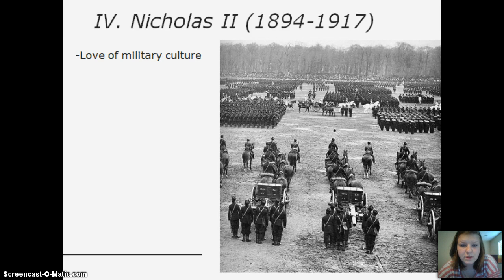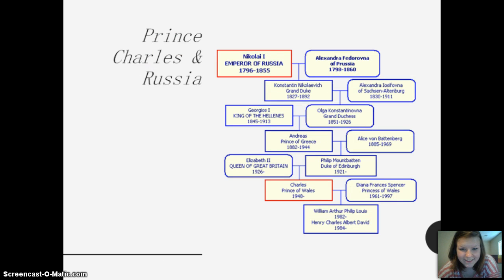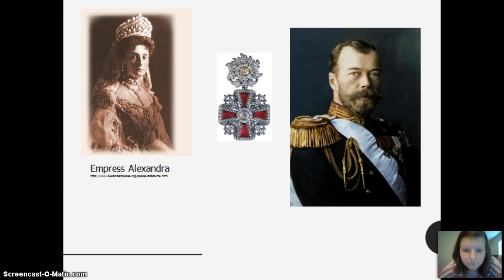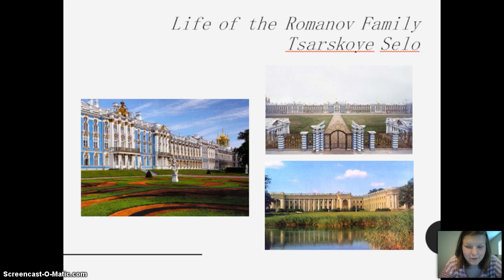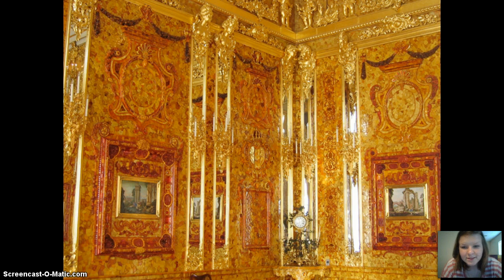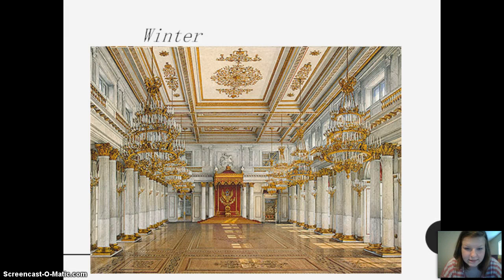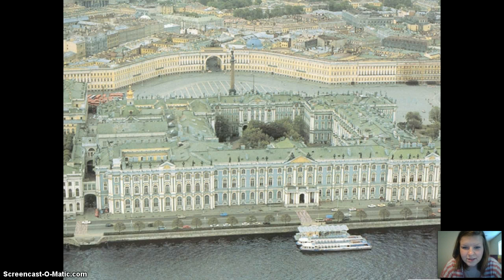His personal life: he loved military culture. This is his family tree. He married Empress Alexandra. Back to the Romanov family — this is their life and their house. I'm not going to try and pronounce the names. This is the billiard hall; it's really pretty. It's the inside of their house and it looks incredible. Here are some pictures of their family and more of their house — the house in winter. It's just huge.